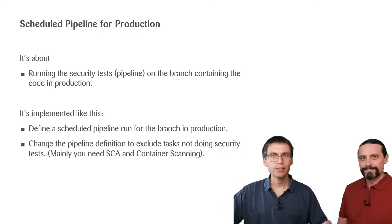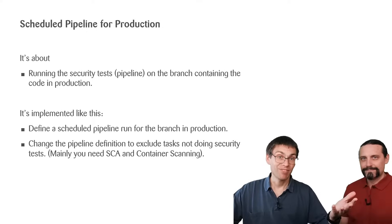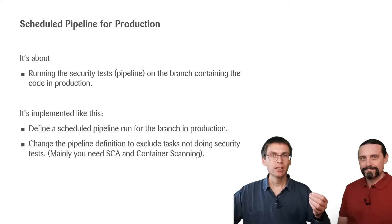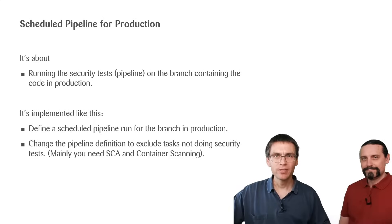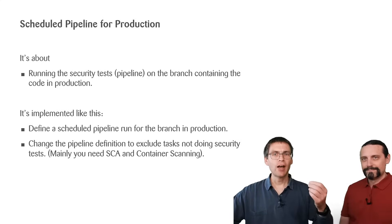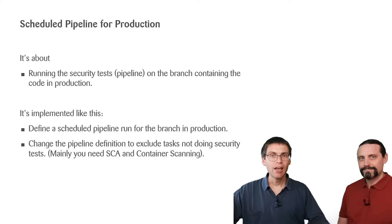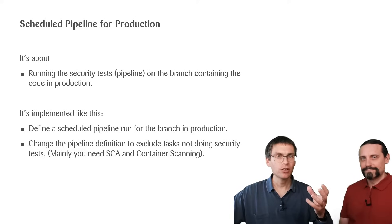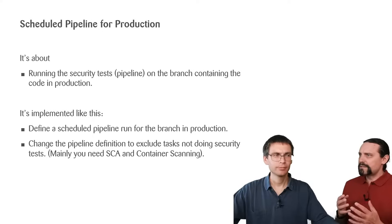Scheduled pipelines is all about running the security tests — so the pipeline on the branch that contains the code that's currently in production. To implement this, we define a scheduled pipeline run for the branch in production within GitLab, and we will have to change the pipeline definition, so the GitLab CI.yml file, to exclude all those tasks that are not relevant for these runs.